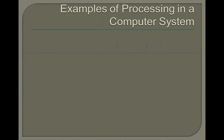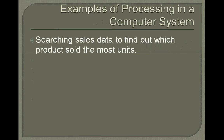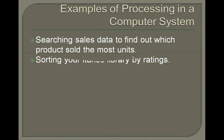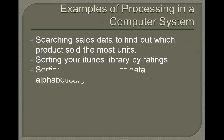Examples of Processing in a Computer System. Some examples of processing include: searching sales data to find out which product has sold the most units — this processes all the sales data and sorts it to find the most successful product; sorting your iTunes Library by Ratings — this processes the order of all your ratings and gives you an order from highest to lowest rating; and sorting a list of customer data alphabetically, which is almost identical to the iTunes Library process but done with customer data instead.